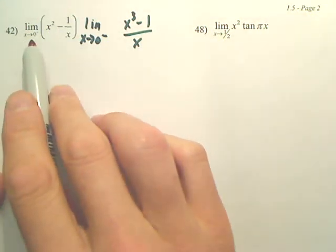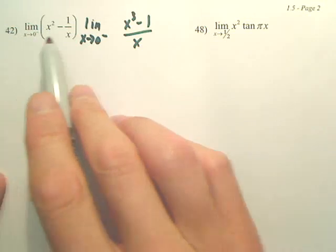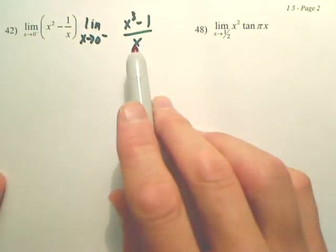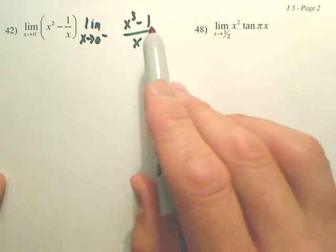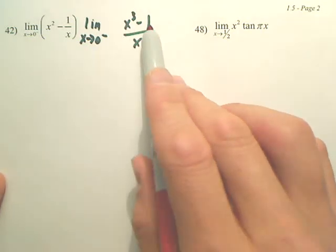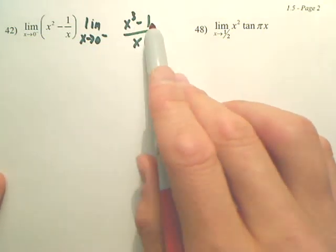Now, if I want to limit as x approaches zero, just in general, does it exist? No. Because you get zero over, sorry, you get zero on the bottom and you get negative one on top.